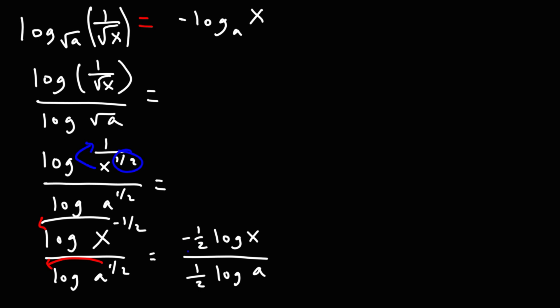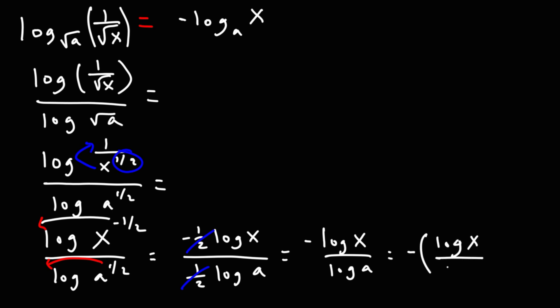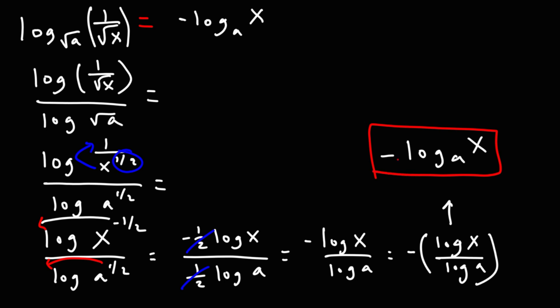Now 1/2 divided by 1/2 is 1, but we do have a negative sign in front. So right now we have negative log x over log a. We can then use the change of base formula to convert from a division of two logs into a single log, and this gives us negative log base a of x. So now you know how to prove logarithmic equations like this using the change of base formula.